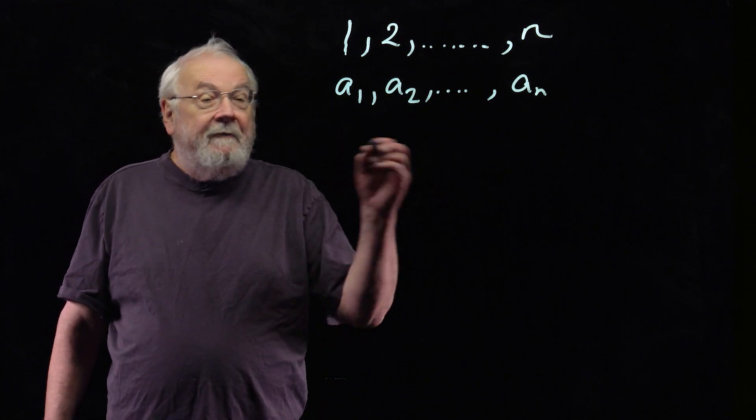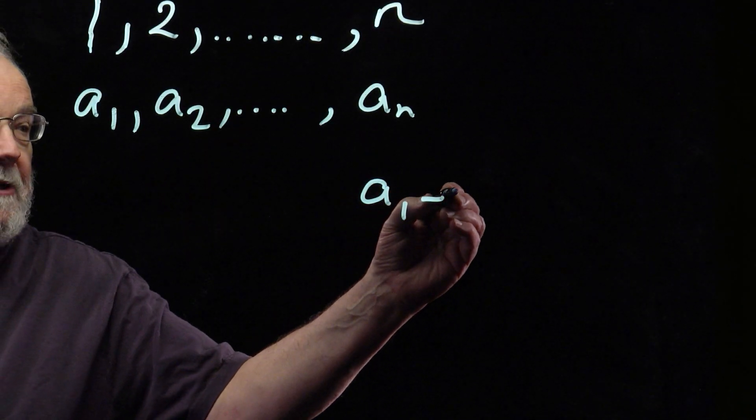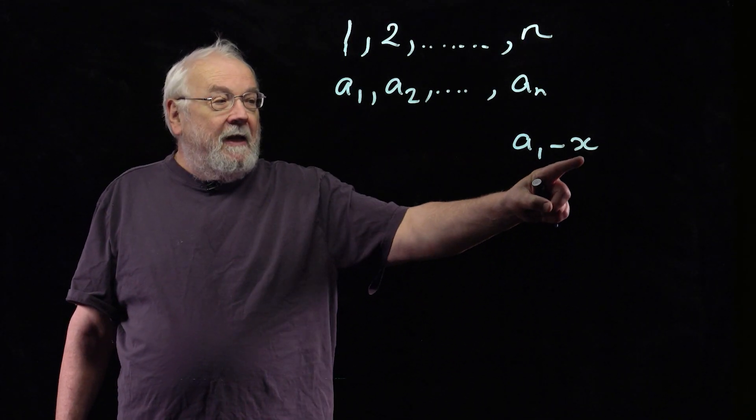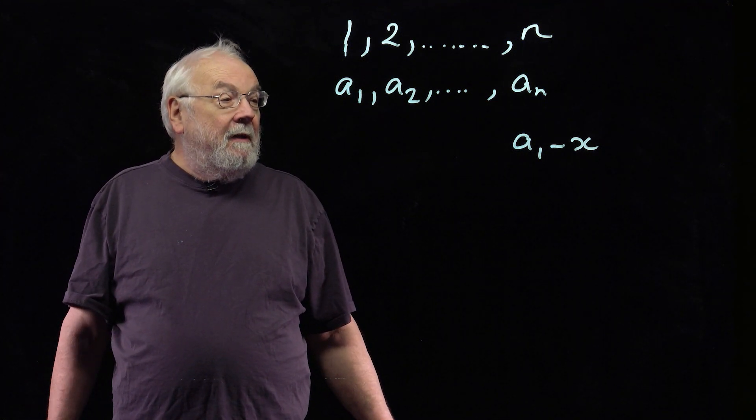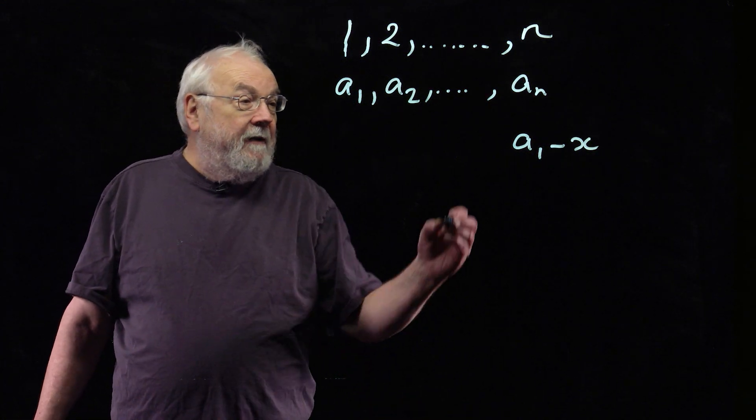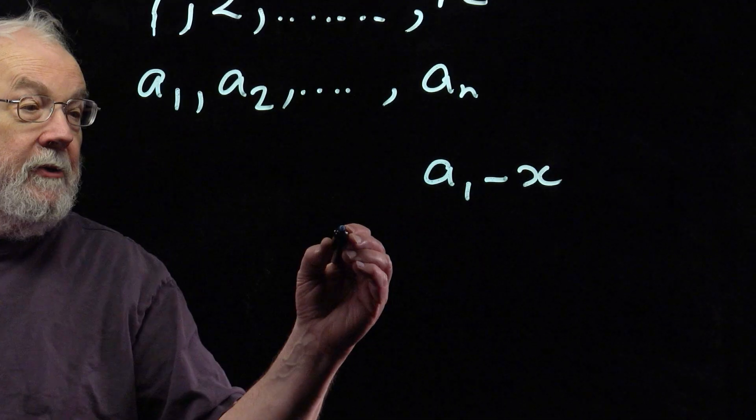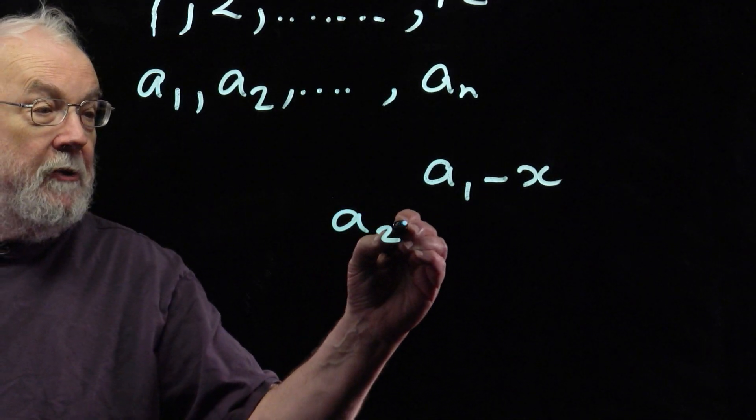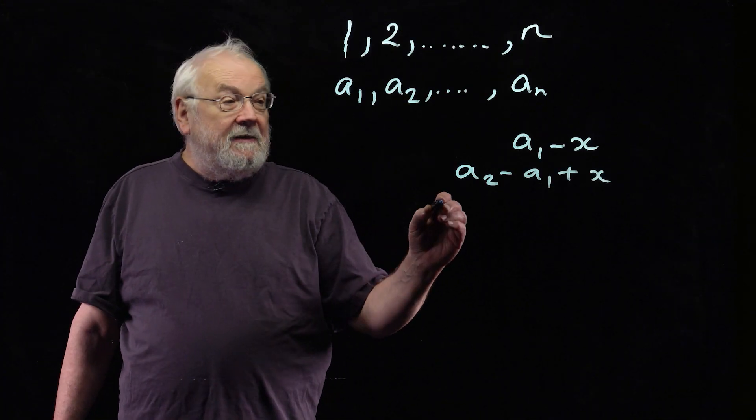If you just do one card and start it off with x, then you'd multiply x by minus 1, then you'd add a₁. But then the second card gets turned over, so you change the sign of this, and then you add a₂. So the next one would be a₂ minus a₁ plus x, and so on.